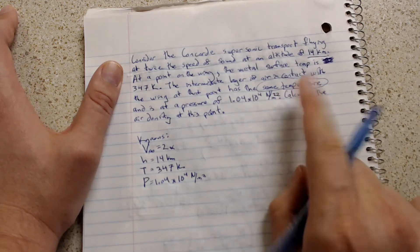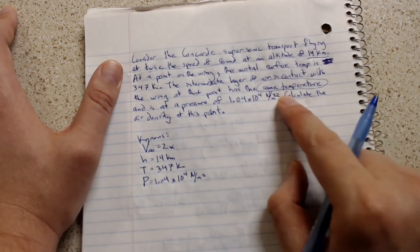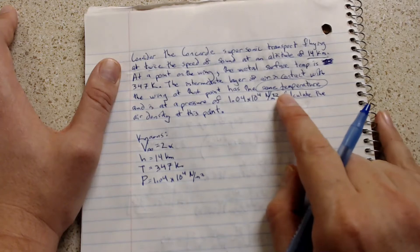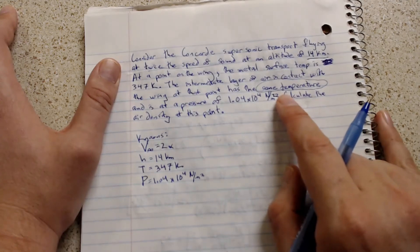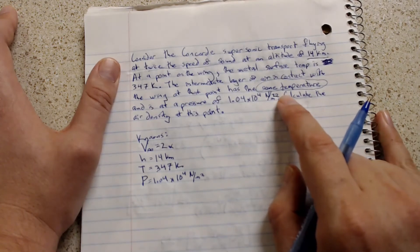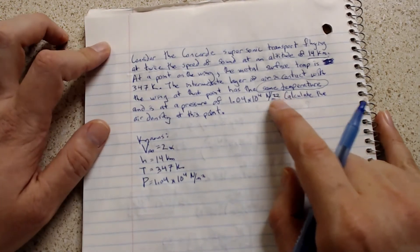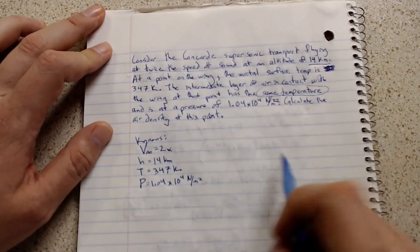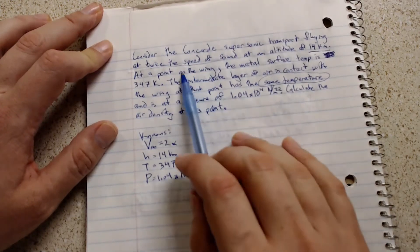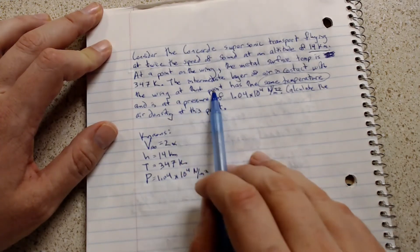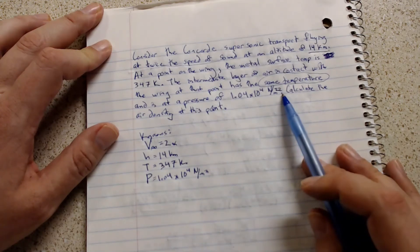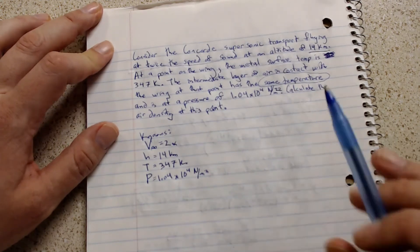Now, this is actually really nice of them because sometimes this is one of the things that is hidden or that you have to kind of know when you're working a problem. Sometimes, instead of saying same temperature, it might say that the metal on the wing and the air at that point are in thermal equilibrium. It means the same thing.